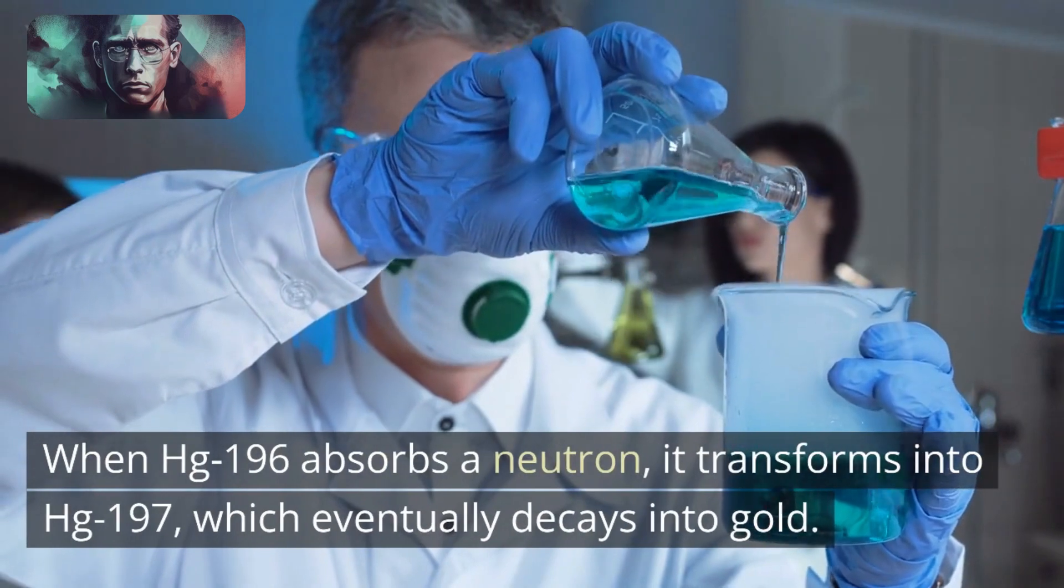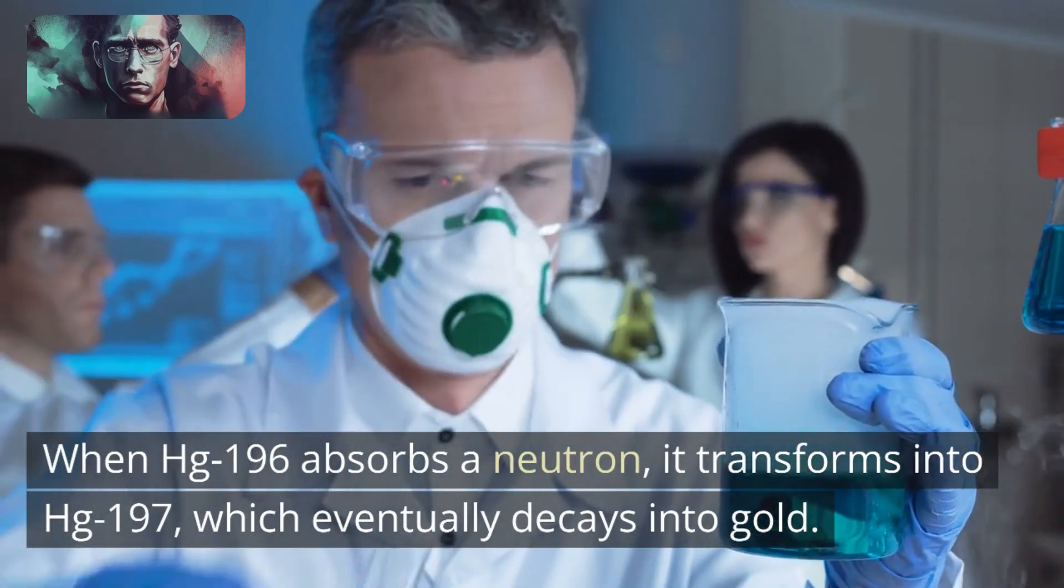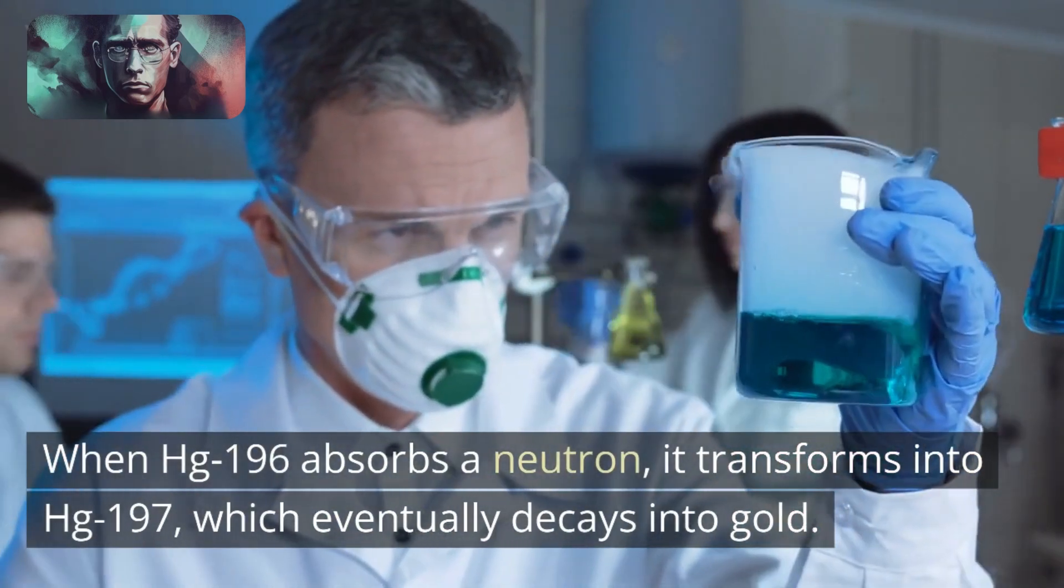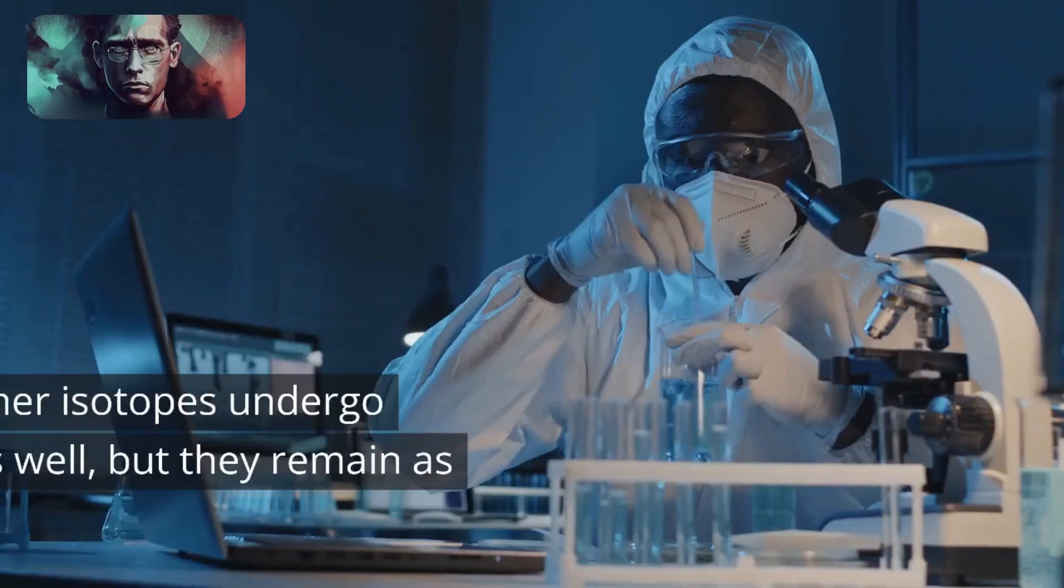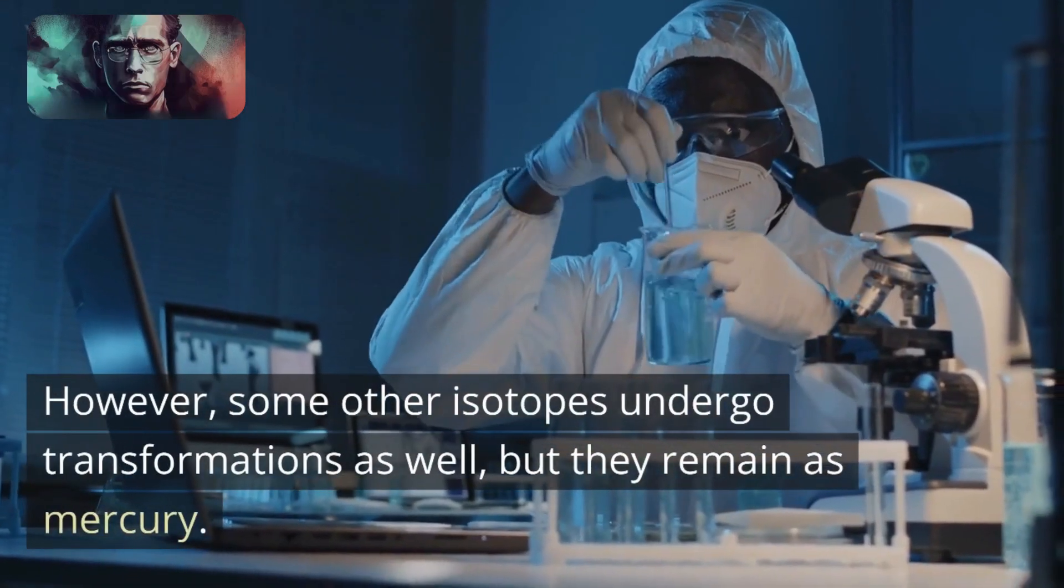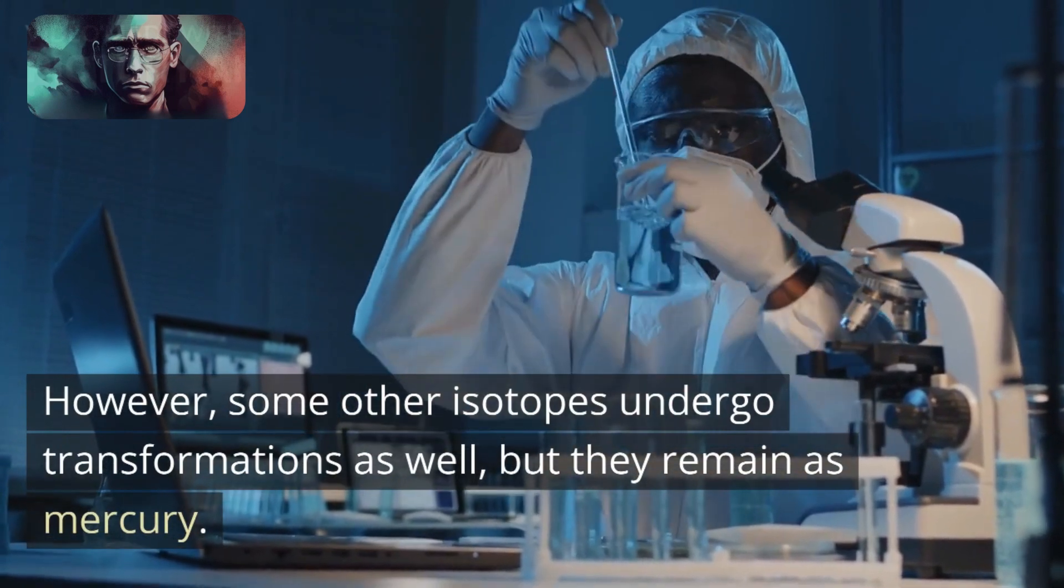When HG-196 absorbs a neutron, it transforms into HG-197, which eventually decays into gold. However, some other isotopes undergo transformations as well, but they remain as mercury.